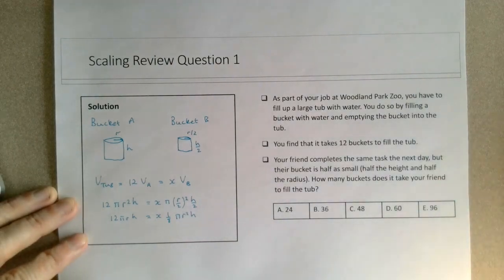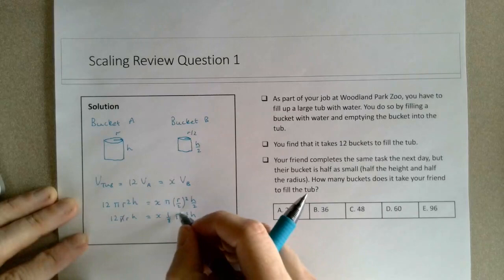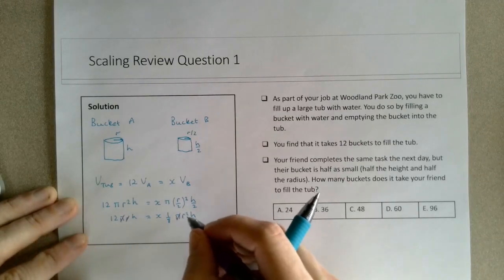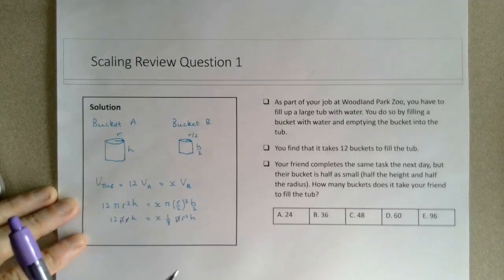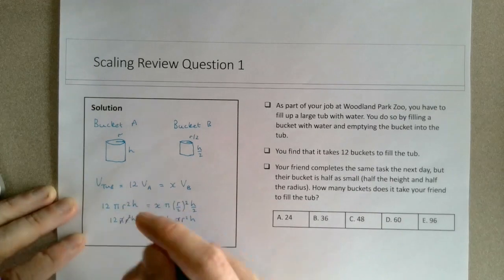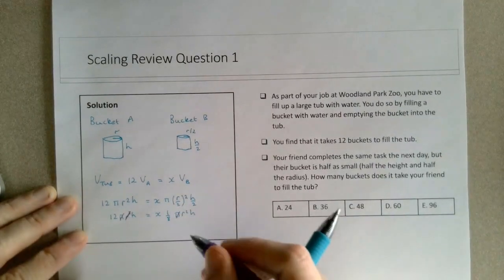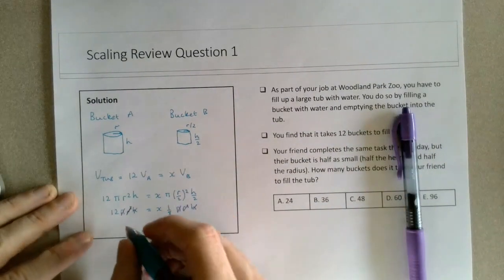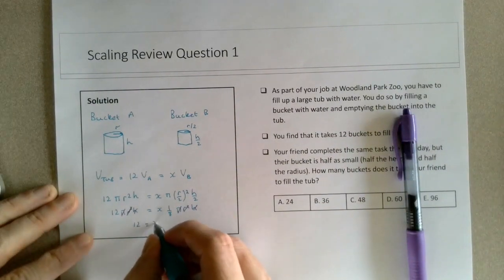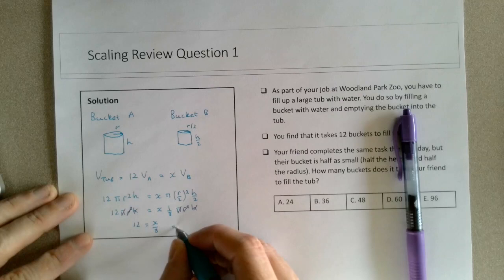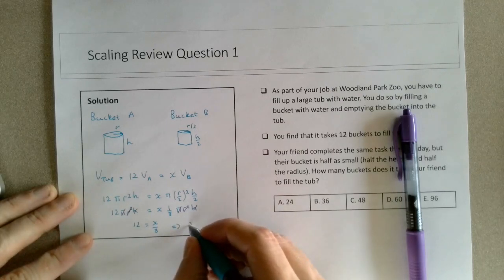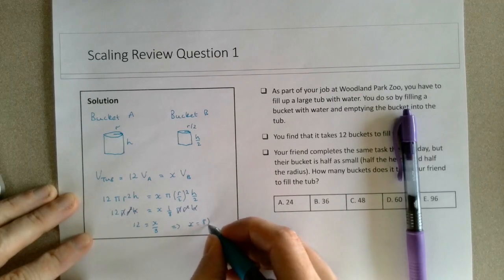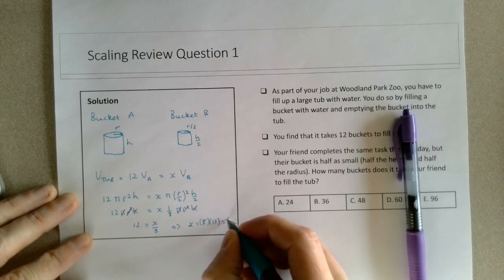And then I can cancel out those quantities pi r, and there should be a square there, so get rid of that r squared, and then it should be canceled out to h. So we would have 12 is equal to x over 8, which means that x is equal to 8 times 12, which is 96.